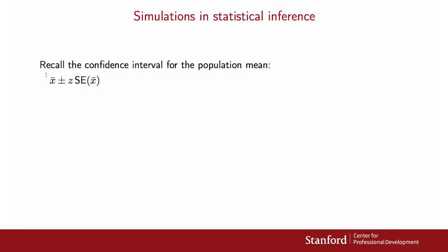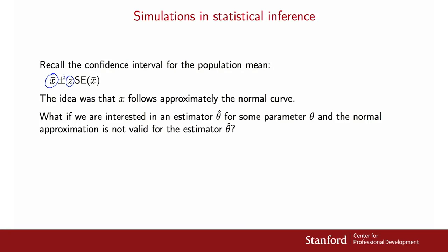Remember that very simple formula for the confidence interval for a population mean. We simply take the sample mean plus or minus z times the standard error. The reason why we use z is because the sample mean approximately follows the normal curve. Now, what happens if we are interested in a different estimator, theta-hat, for some parameter theta of the population, and the normal approximation is not valid? In that case, such a simple formula is not applicable anymore.